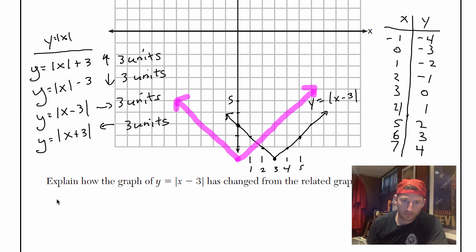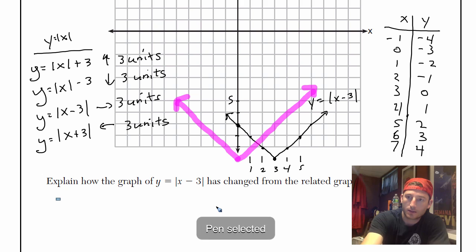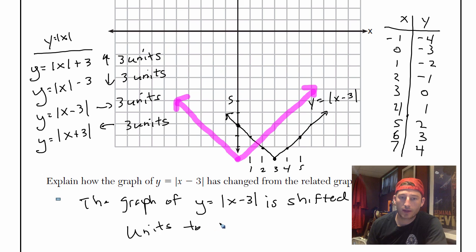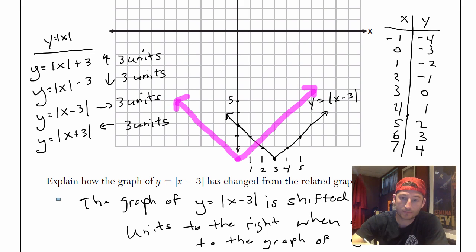So I might write something like that. The graph of y equals absolute value of x minus 3 is shifted 3 units to the right when compared to, sorry, my handwriting is a little sloppy. I'm still getting used to writing with this pen. So the graph of this is shifted 3 units to the right when compared to the graph of y equals the absolute value of x. And that's a good explanation. So you're done. That's pretty much it.